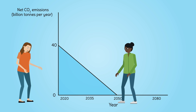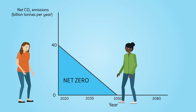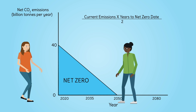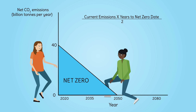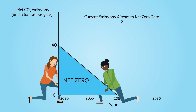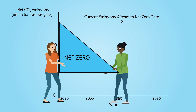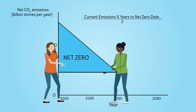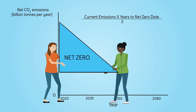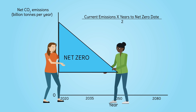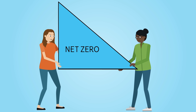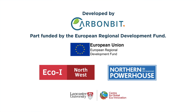Back to our triangle and staying below our budget — if you know your current annual emissions and the number of years until your net zero target, any individual or organization can work out their carbon budget, just like we did with our triangle earlier. So what's yours?